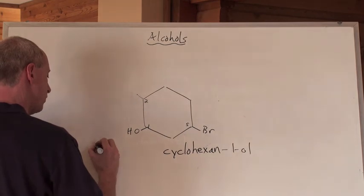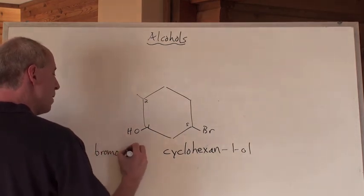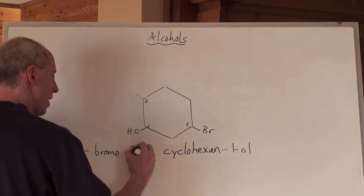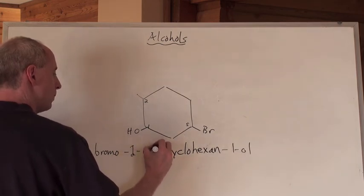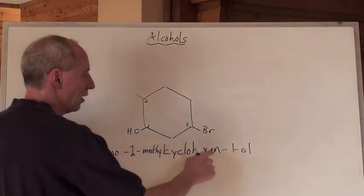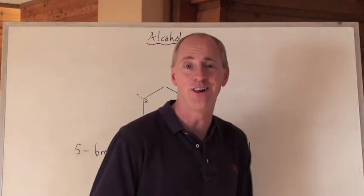What comes first? Well, the bromo does, because it's alphabetical. Bromo, where's the bromo? At the five. Where's the methyl? At the two. And so that would be 5-bromo-2-methyl-cyclohexan-1-ol. Ouch.